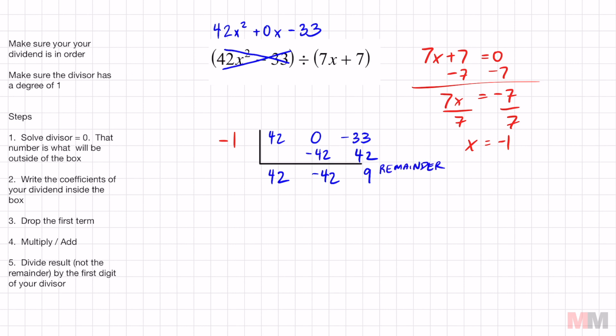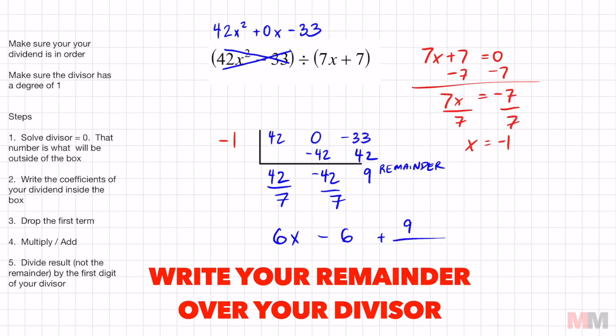We're in the last step. Divide the result by the first digit of my divisor. The first digit of my divisor is 7, and I'm going to divide each one of these by that. Not my remainder though. Don't do it to the remainder. So 42 over 7 is 6. Negative 42 over 7 is negative 6. And if you don't know what variable to write on those answers, just ask yourself, what is 42x squared divided by 7x? That's 6x. So my leading variable is an x minus 6 with a remainder of a positive 9. And all you got to do to write your remainder properly is put that over your divisor. 7x plus 7. There is my answer.